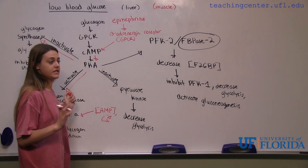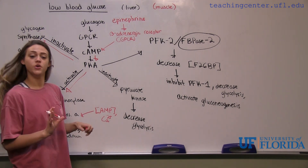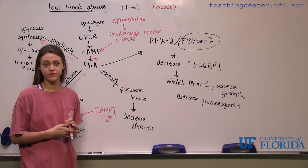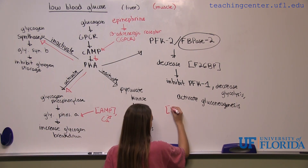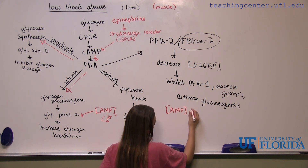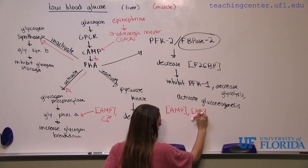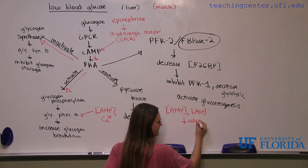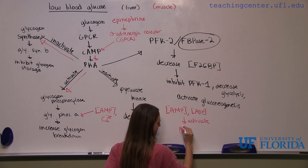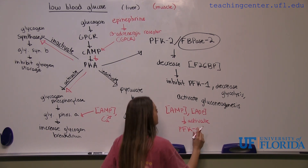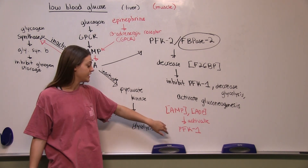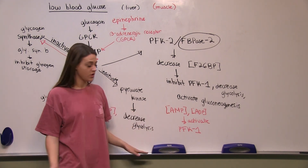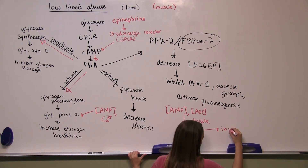As we discussed in the section covering high blood glucose levels, ATP is going to inhibit phosphofructokinase 1. So if ATP inhibits PFK1, that means AMP and ADP are going to activate PFK1. AMP and ADP both signal low energy, so you're going to want to activate glycolysis. Therefore, AMP and ADP activate PFK1, which increases glycolysis.